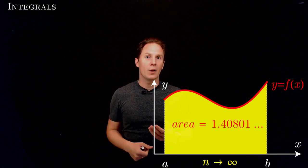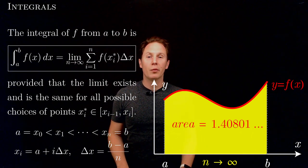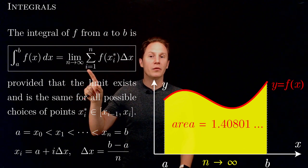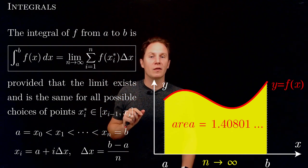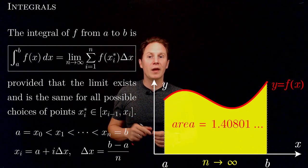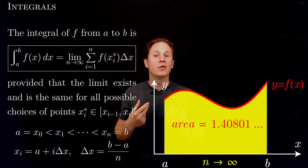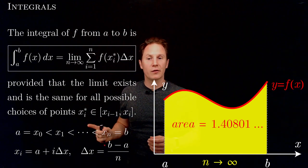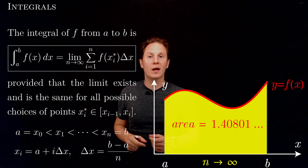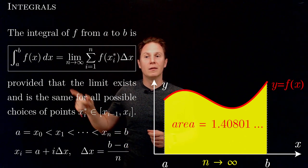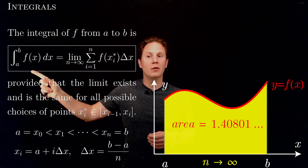Now let's see how we can formalize this whole idea and procedure using a precise definition. We say that the integral of a function f from a point a to a point b is the limit as n goes to infinity of the sum indexed by i from 1 to n of the products f(xi*) times delta x. Delta x represents the width of the rectangles when we have n of them, and f(xi*) represents the height of the ith rectangle. Provided that this limit exists and is the same for all possible choices of sample points xi*, taken from the ith sub-interval, we say the function is integrable over interval ab, and we denote this limit as the definite integral of f from a to b, read as the integral from a to b of f(x) dx.